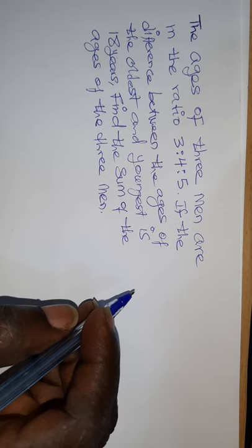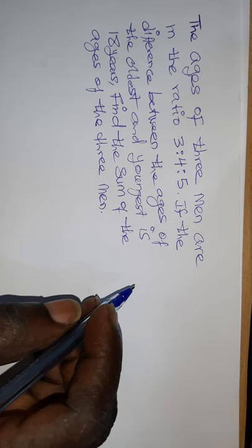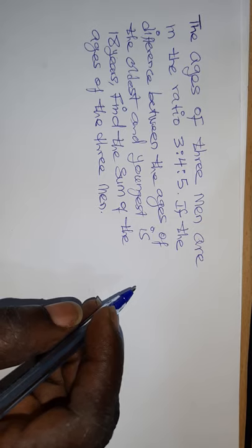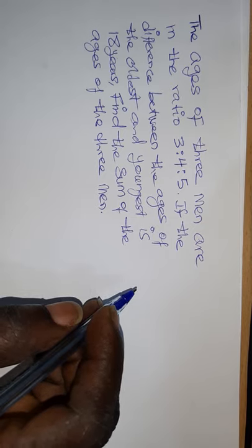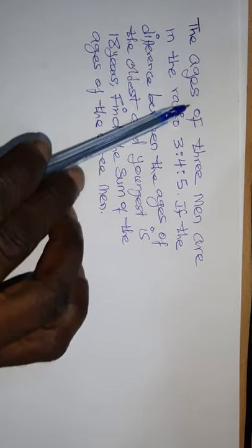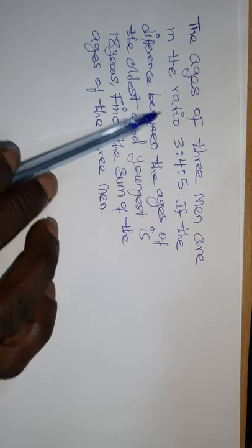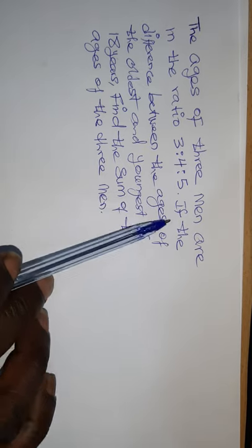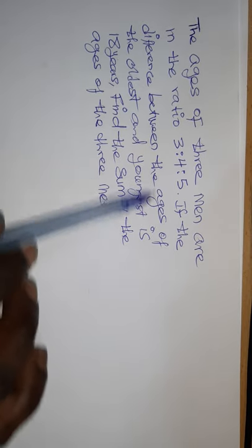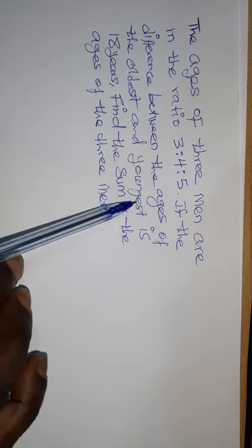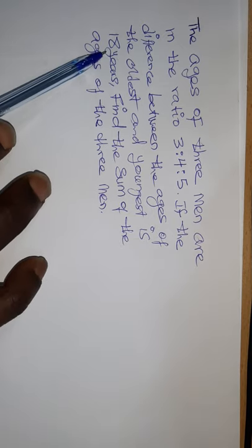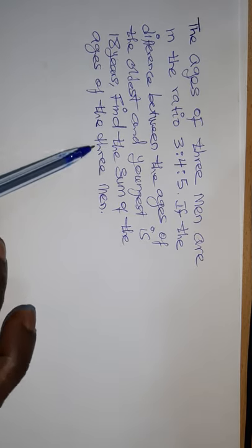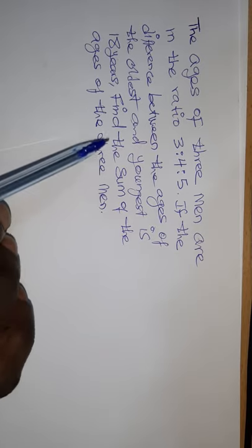I want to quickly show you how to solve this type of question. The question says: the ages of three men are in the ratio 3:4:5. If the difference between the ages of the oldest and youngest is 18 years, find the sum of the ages of the three men.